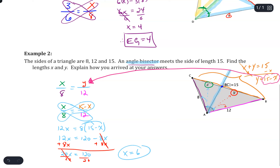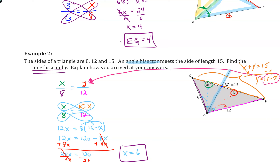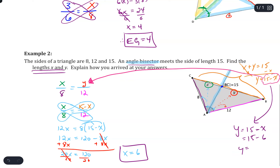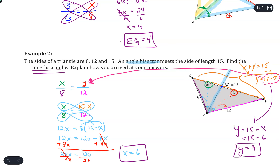The question asks for both x and y. So x equals 6 is one answer. Using y equals 15 minus x and plugging in 6 gives y equals 9. So x equals 6 and y equals 9. The angle bisector theorem lets us create the proportion, and no matter how complex the side values, as long as you set up the proportion correctly and use x plus y equals the total side length, you can solve it.